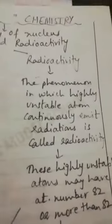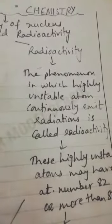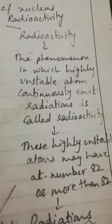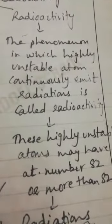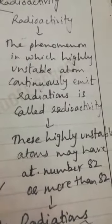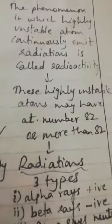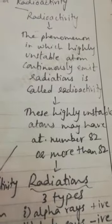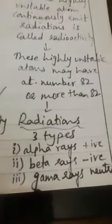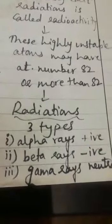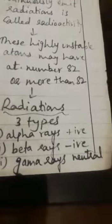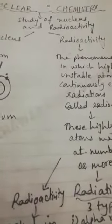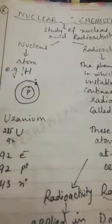The study of the nucleus and radioactivity is called nuclear chemistry. Radioactivity is the phenomenon in which highly unstable atoms continuously emit radiations. These highly unstable atoms may have an atomic number of 82 or more than 82. The radiations are of three types: alpha rays, which are positively charged; beta rays, which are negatively charged; and gamma rays, which are neutral in nature.